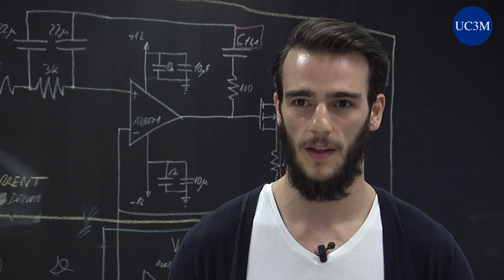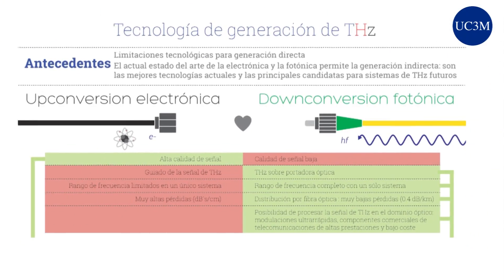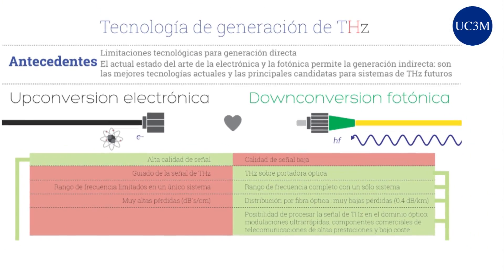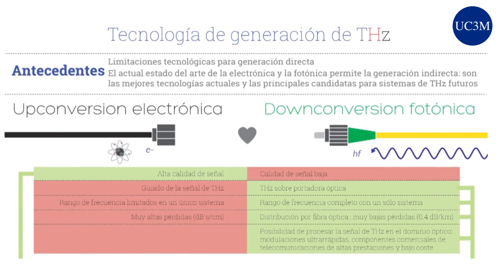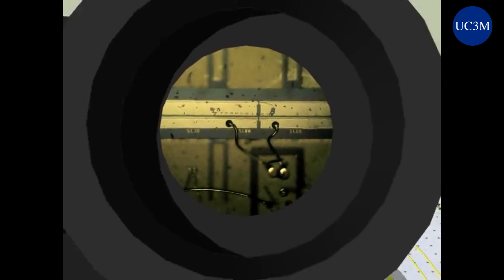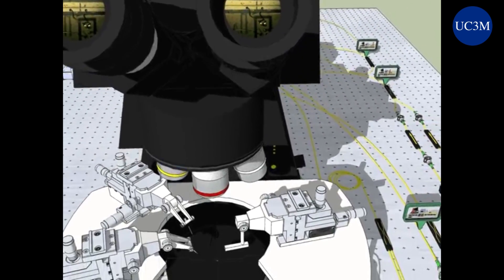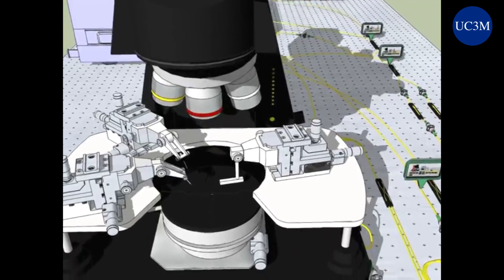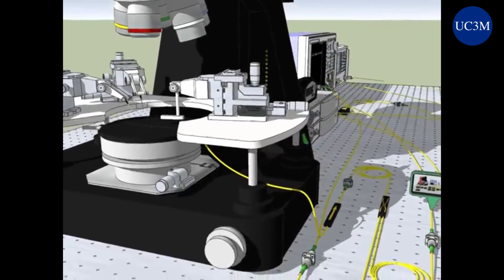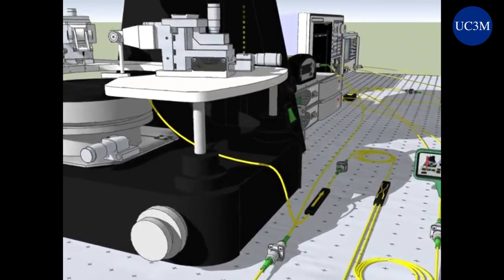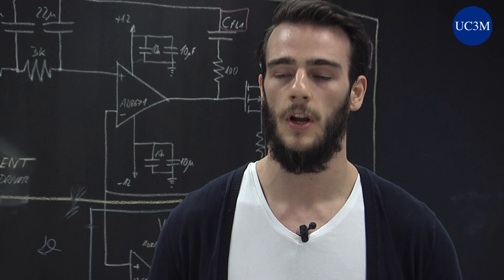¿Qué caracteriza la tecnología de Terahercios? La gran dificultad para generar Terahercios de forma directa. Es por ello que en los últimos años se han utilizado las regiones más desarrolladas, tanto electrónica como fotónica, para generación indirecta en Terahercios. Nosotros combinamos ambas tecnologías para conseguir todas las ventajas y solventar todos los problemas asociados a ellas.